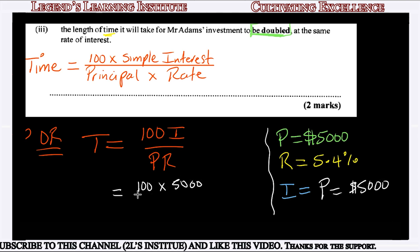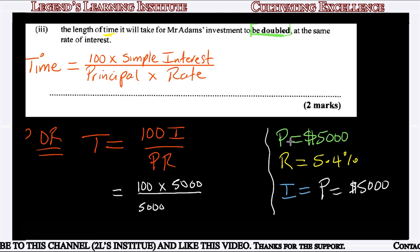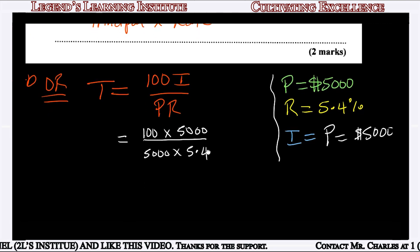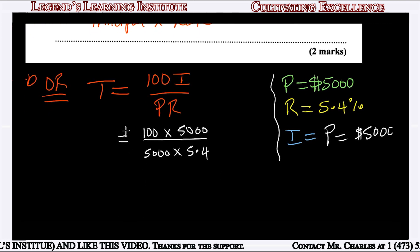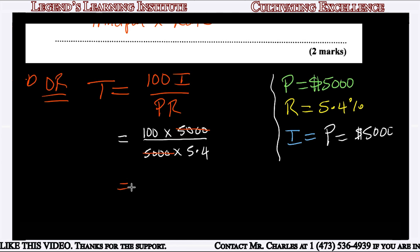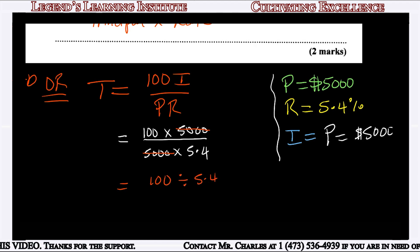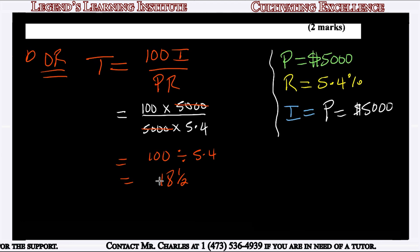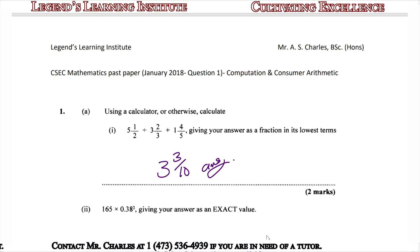So that's 100 times 5,000 divided by 5,000, which is the principal, times 5.4%, which is the rate the credit union pays. The 5,000 in the numerator cancels the 5,000 in the denominator, leaving 100 divided by 5.4, which equals approximately 18.5. So the time for Mr. Adams' investment to be doubled is 18.5 years.